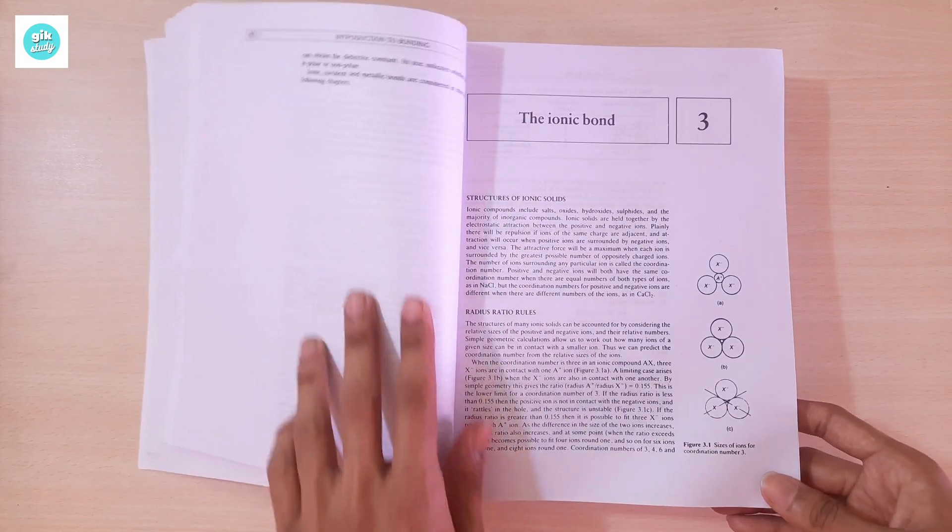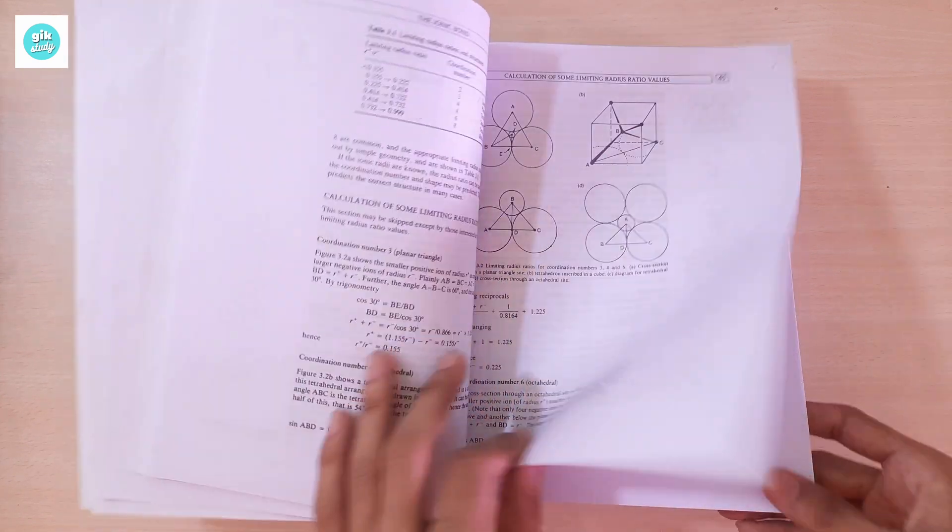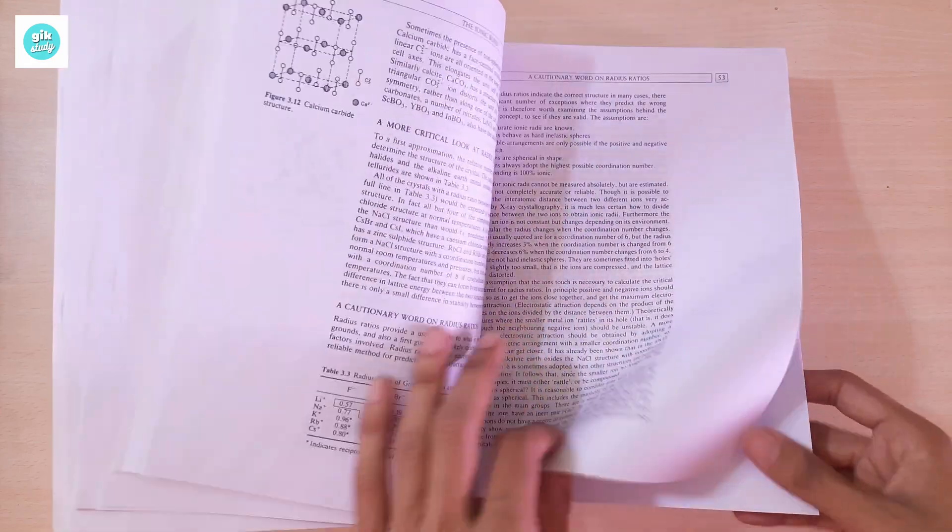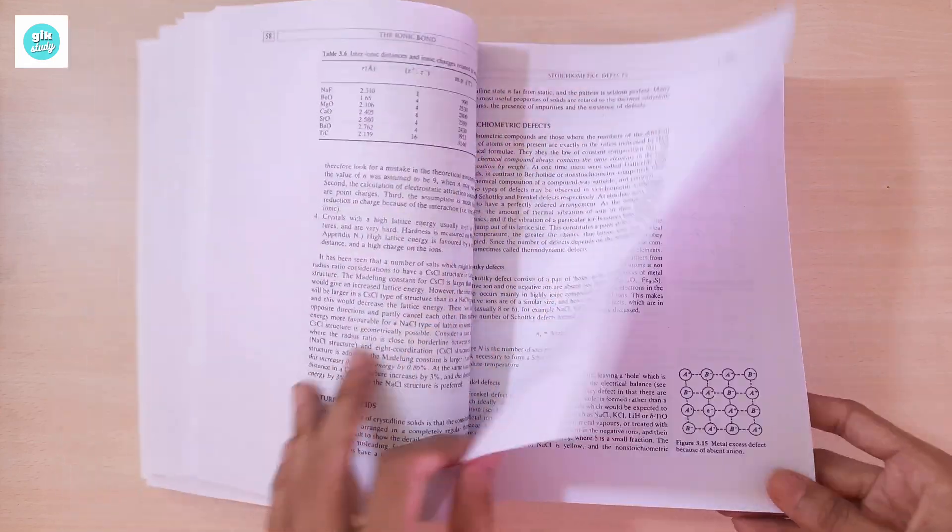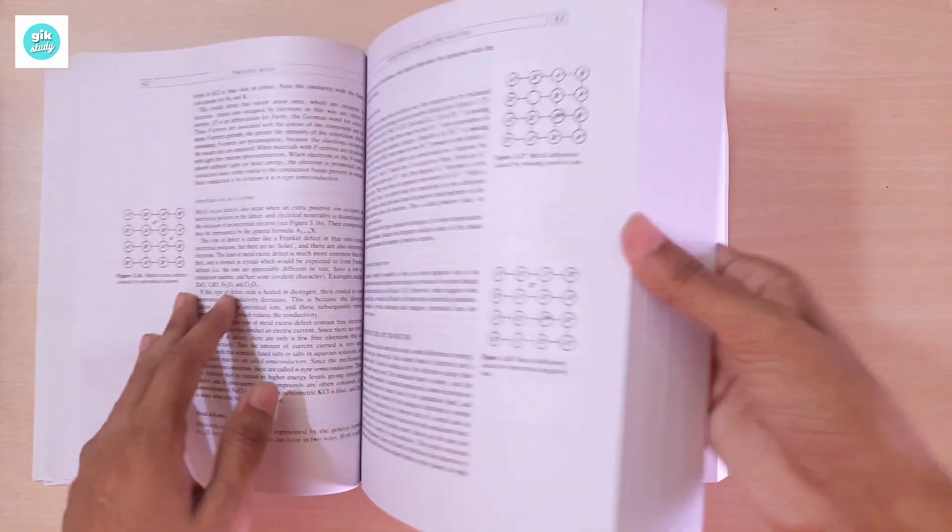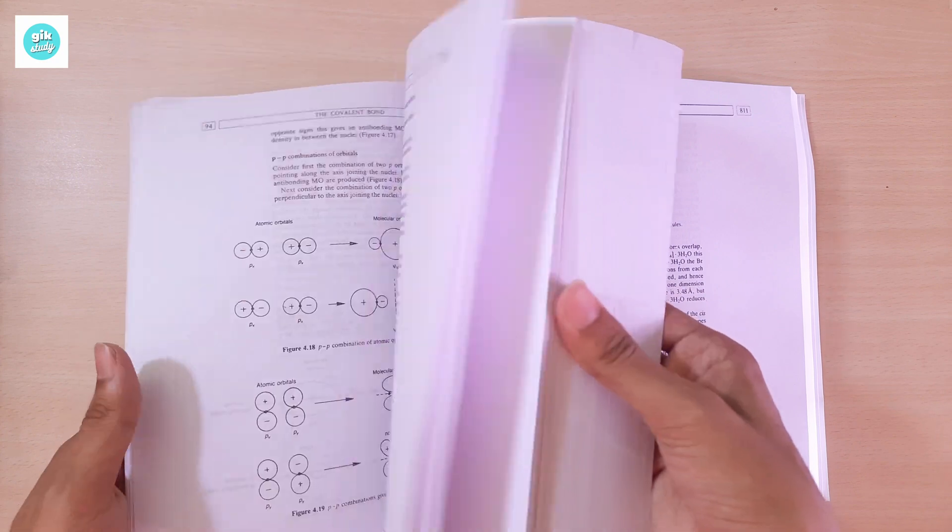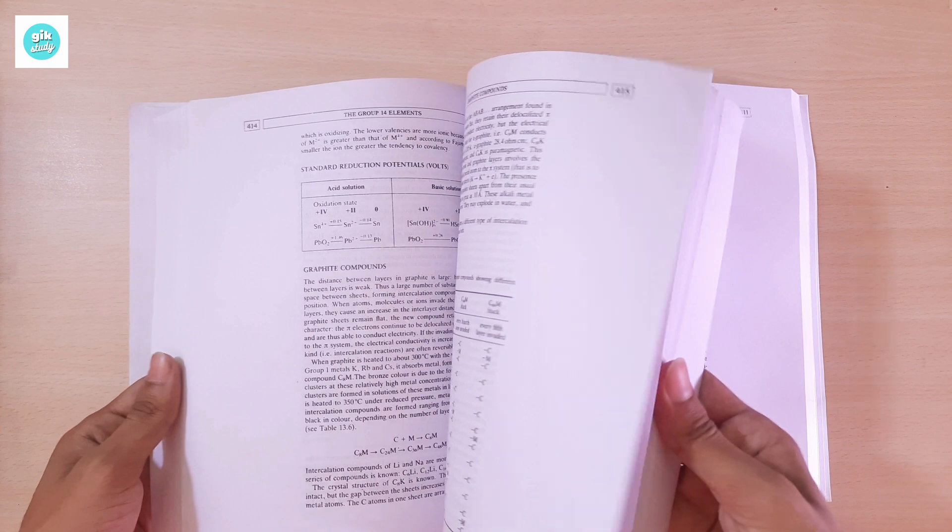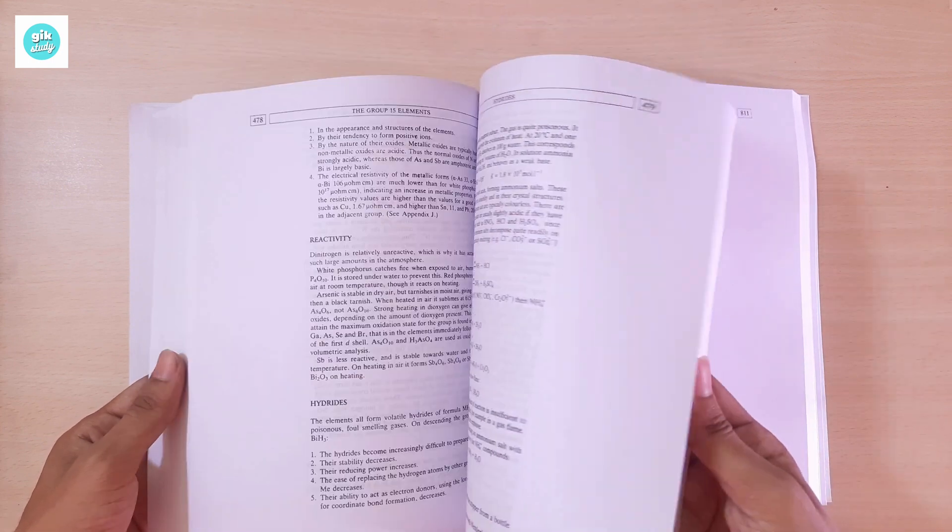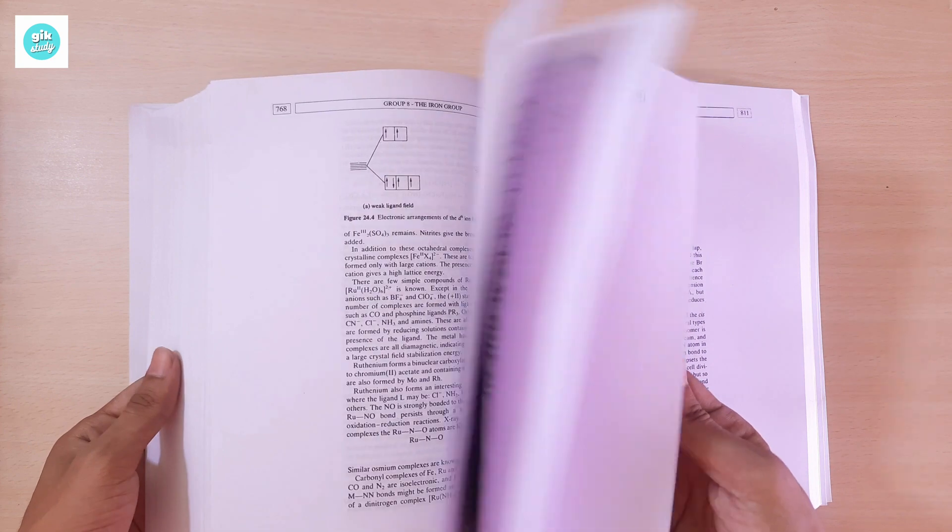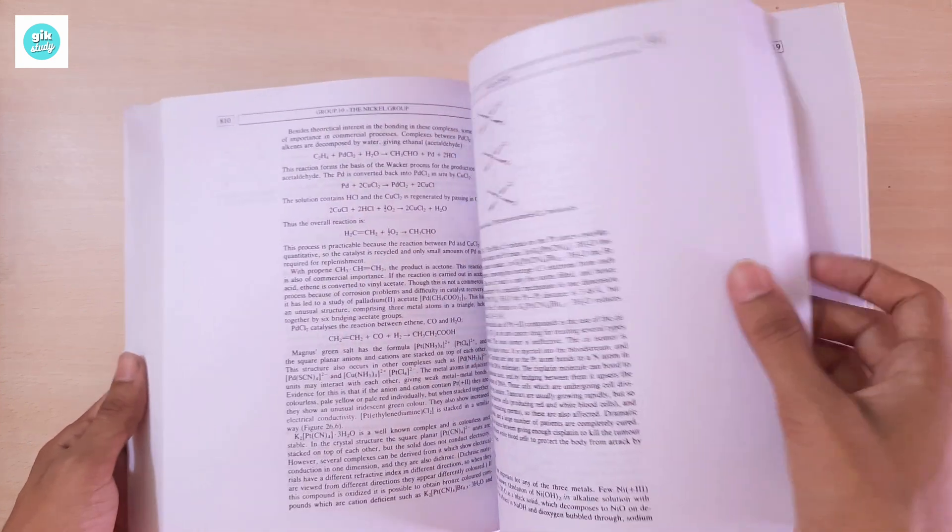Chapter 3: The Ionic Bond. I'm just showing you the book, not going to explain the content in detail. I'm just flipping through the pages so you can see what it looks like.